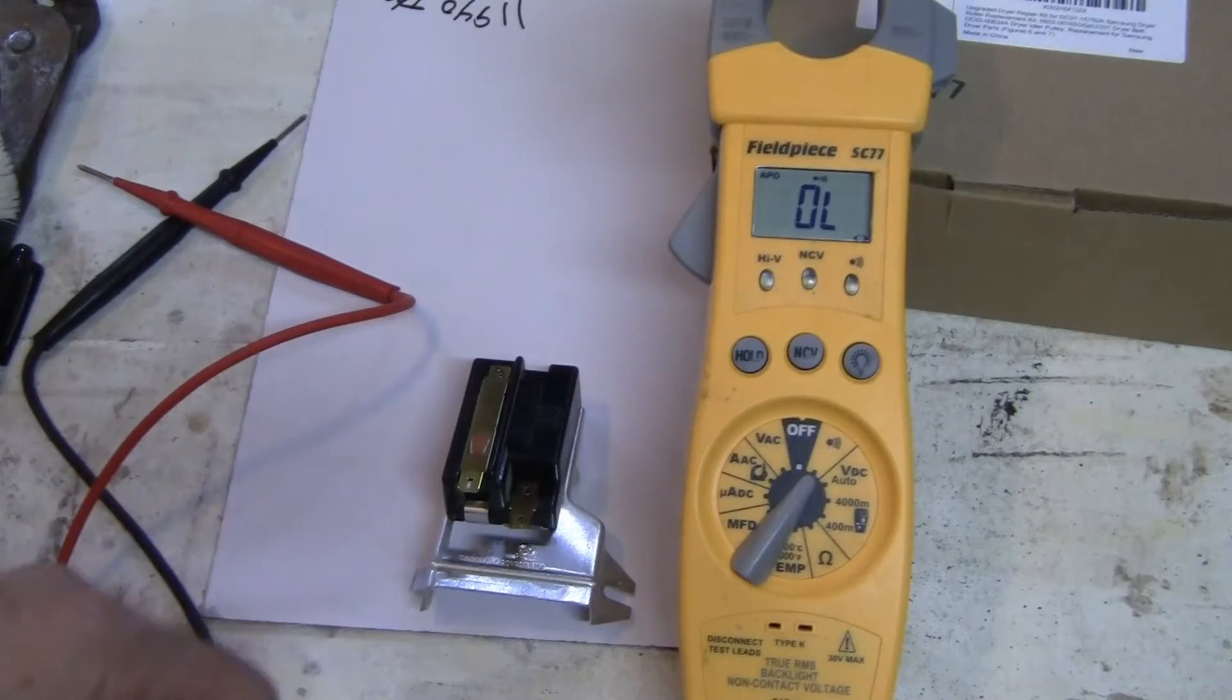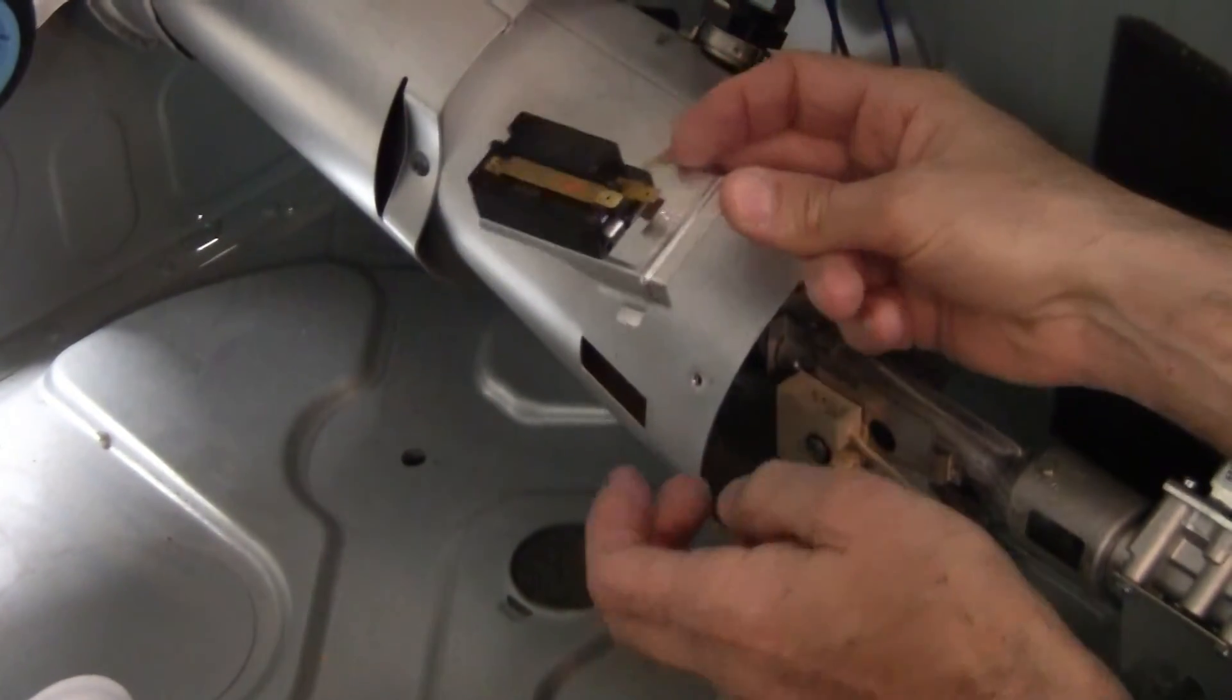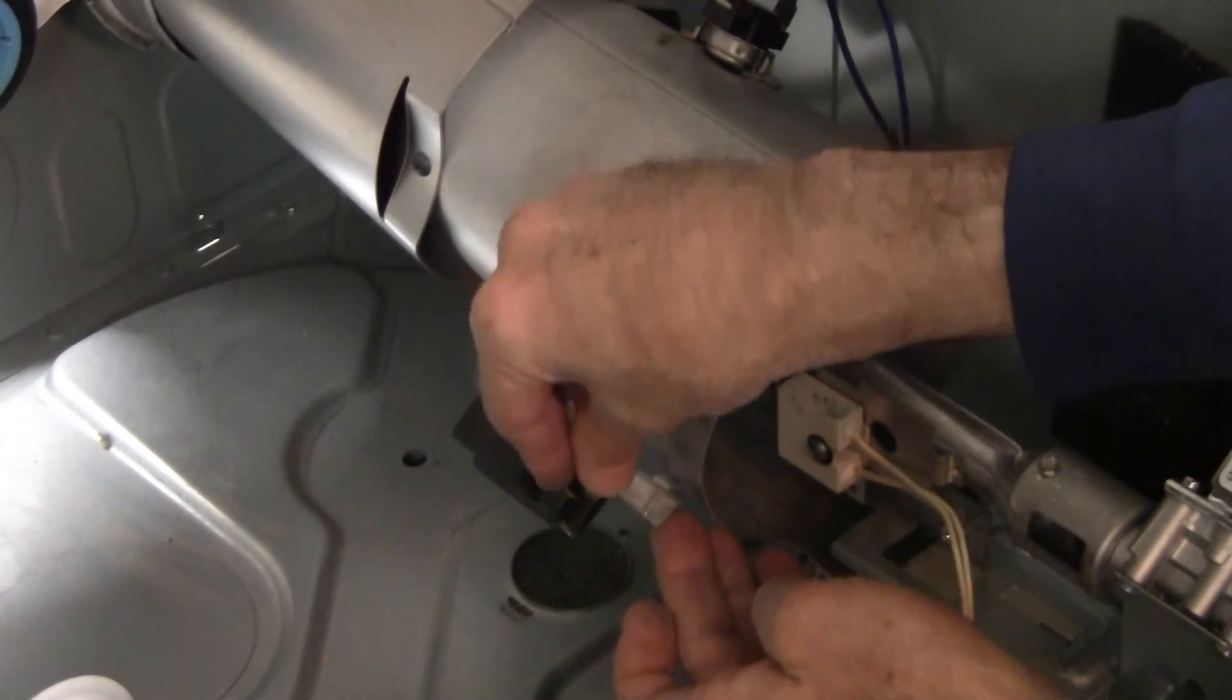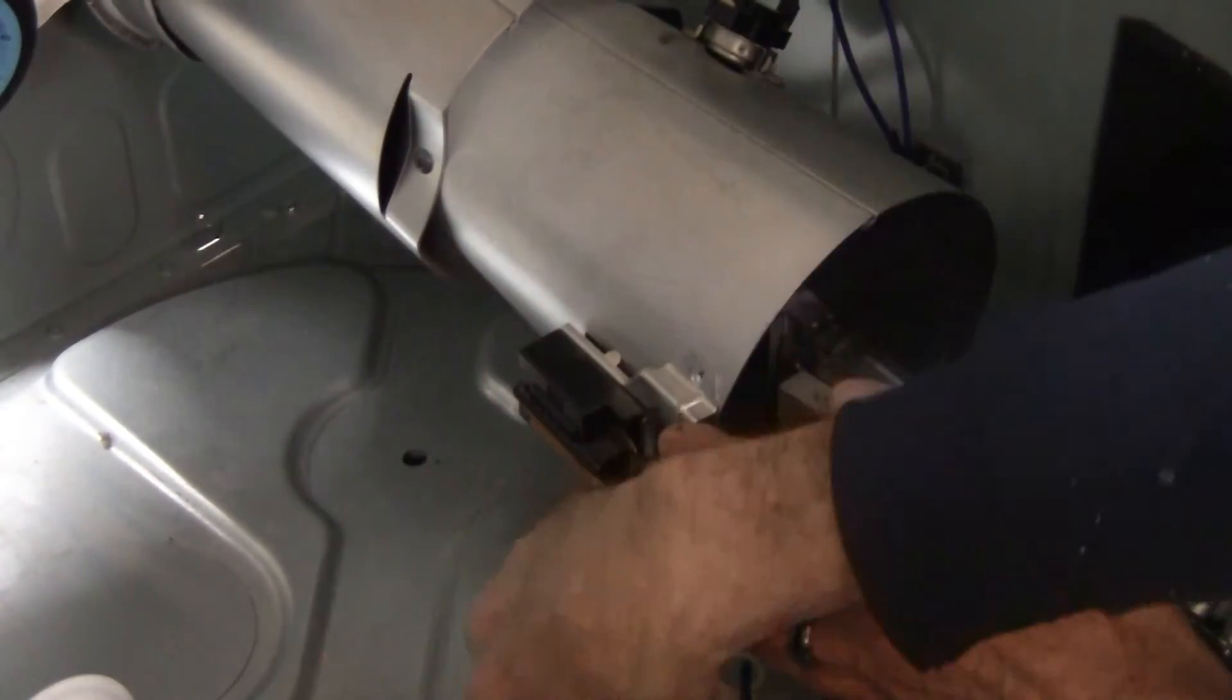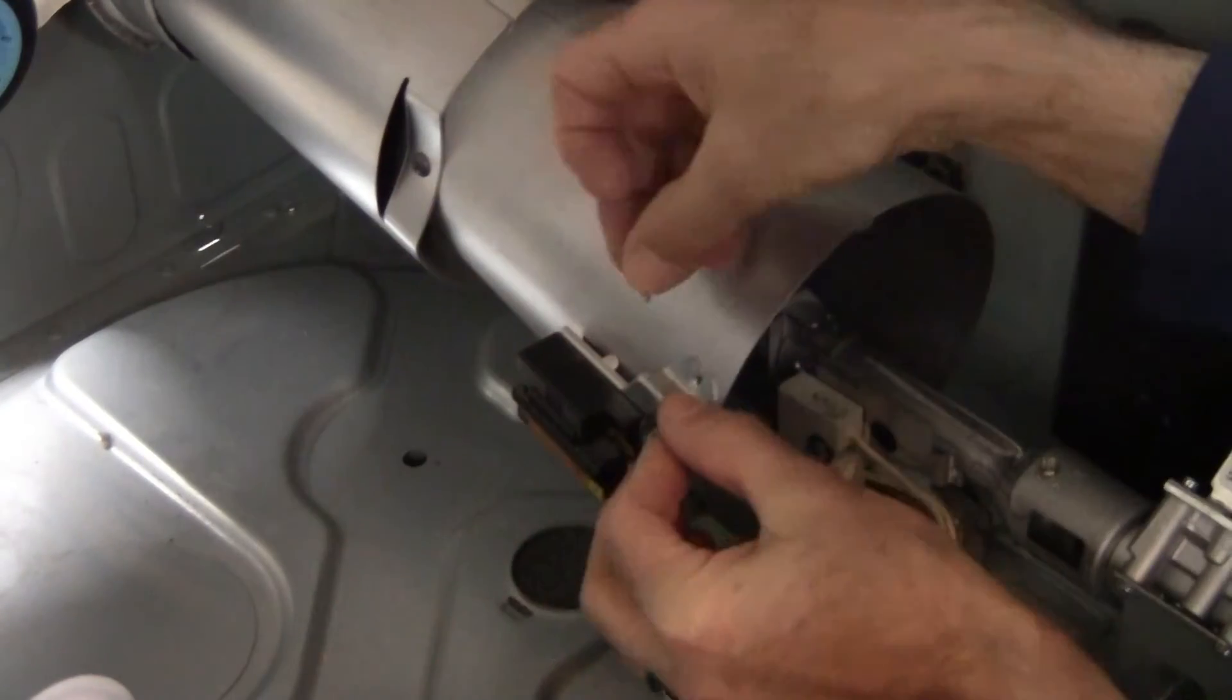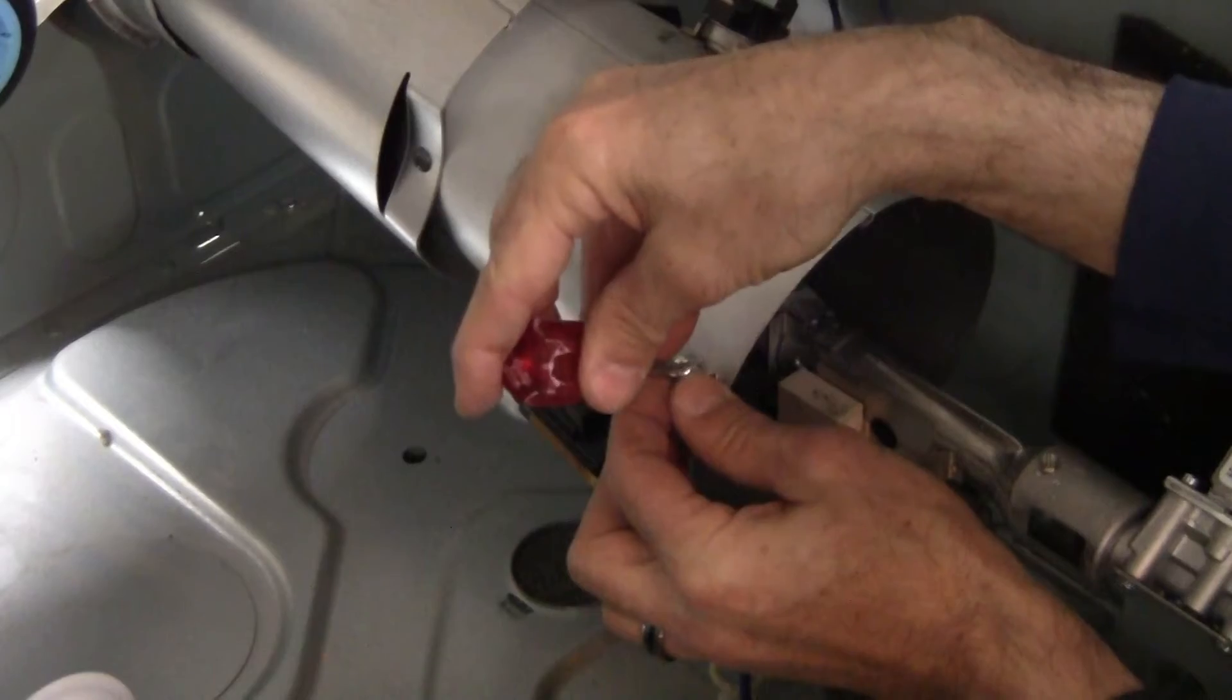Let's go ahead and put the flame sensor back in. There's a little lever, a little slot of metal down here for this to catch on the bottom. We're going to catch that, bring that up, put the screw in, and then put our electrical connection together.